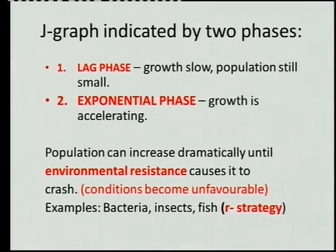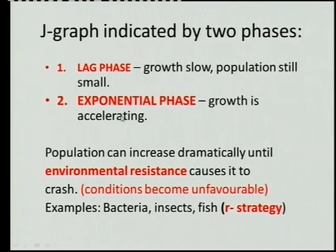There you can see your two phases we've spoken about: growth is slow, population is small, which means it takes time to increase. And then all of a sudden there is rapid growth. If you look at bacteria, you know that under favourable conditions, bacteria can reproduce every 20 minutes. So think about if you have one, and within a few hours you can have thousands of them.